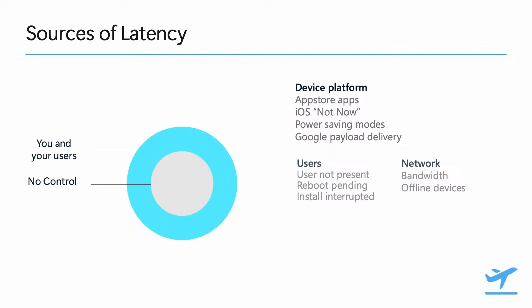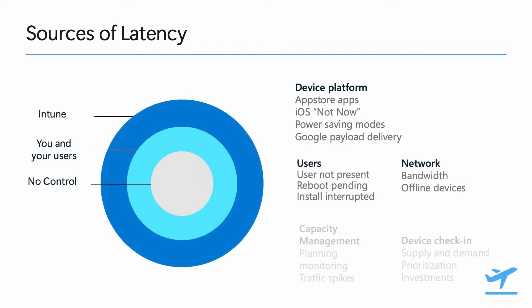The second source of latency is under your and your users' control: a payload targeting a user needs that user to be signed in on that device; an application install cannot proceed until the application is closed; or bandwidth conditions might result in a slow or interrupted app download. The third source of latency is Intune, and for the rest of the session I'm going to focus primarily on what Intune is doing about latency.